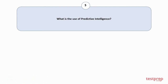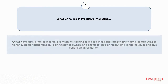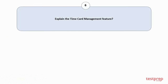Question number five: What is the use of predictive intelligence? Predictive intelligence utilizes machine learning to reduce triage and categorization time, contributing to higher customer contentment. It helps bring service owners and agents to quicker resolutions, pinpoint issues, and give actionable information.